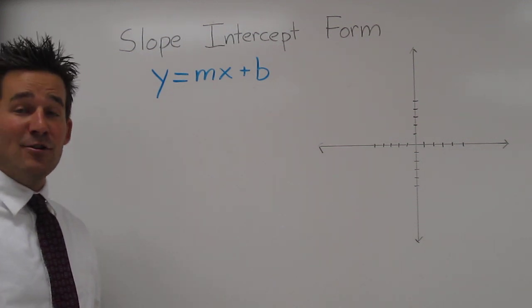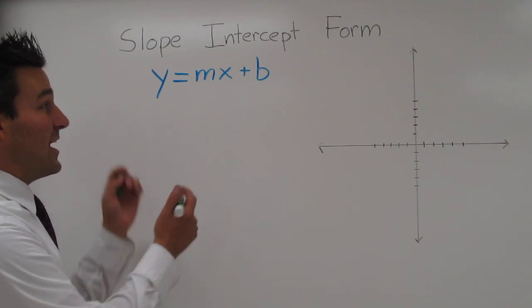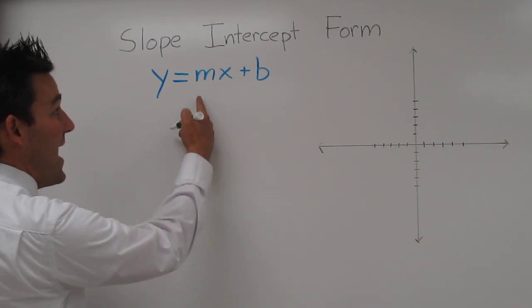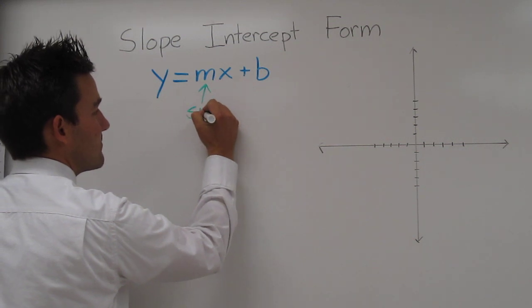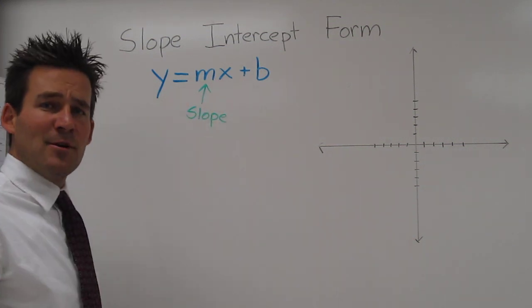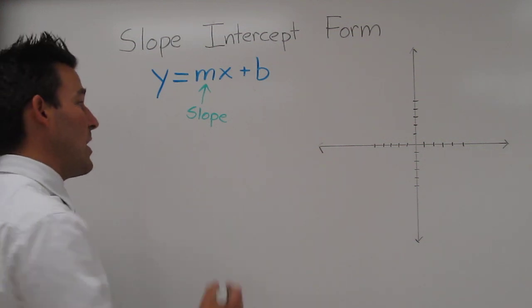If we encounter something in this form, we can look at it and right away know that m is the slope. And remember, slope is rise over run.